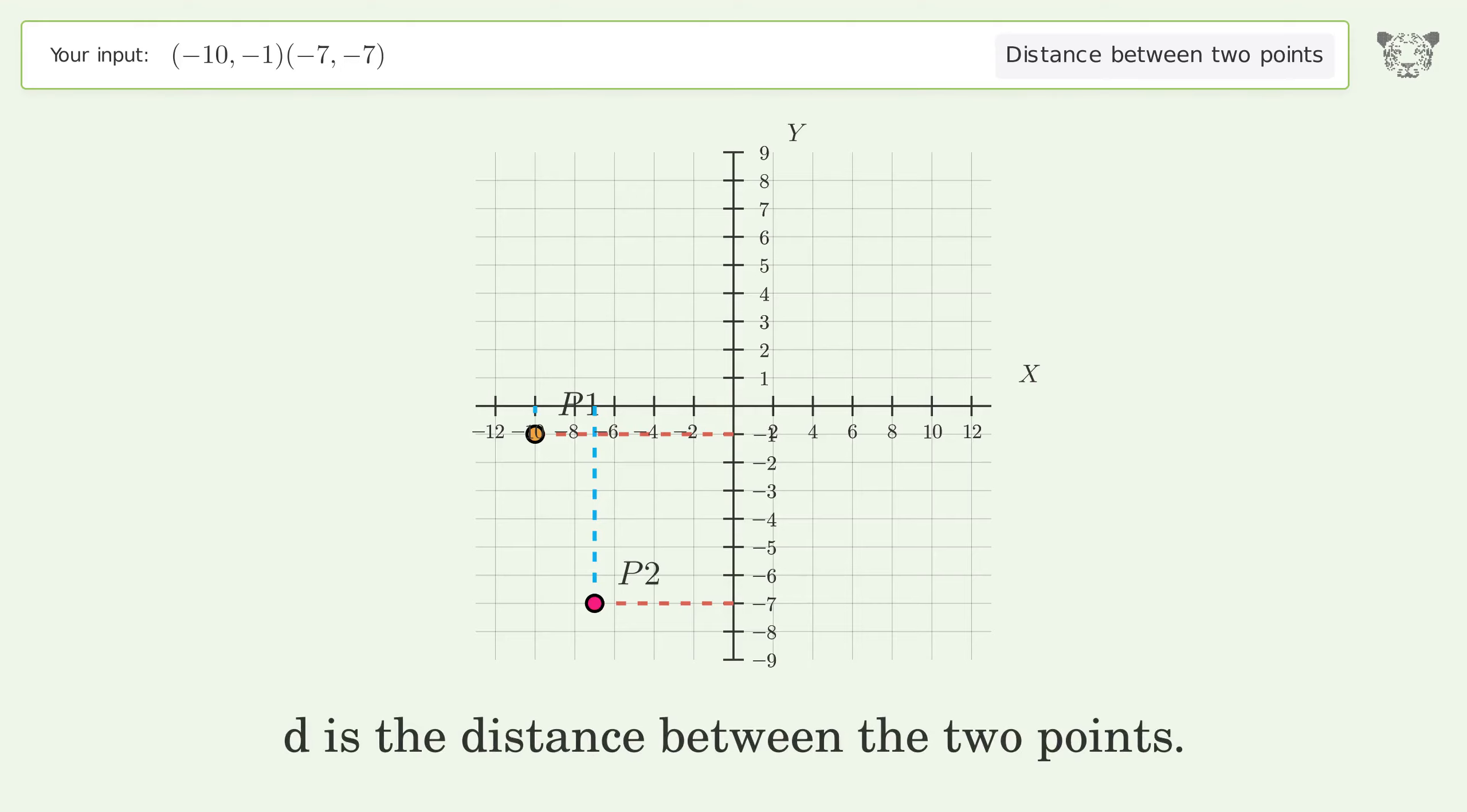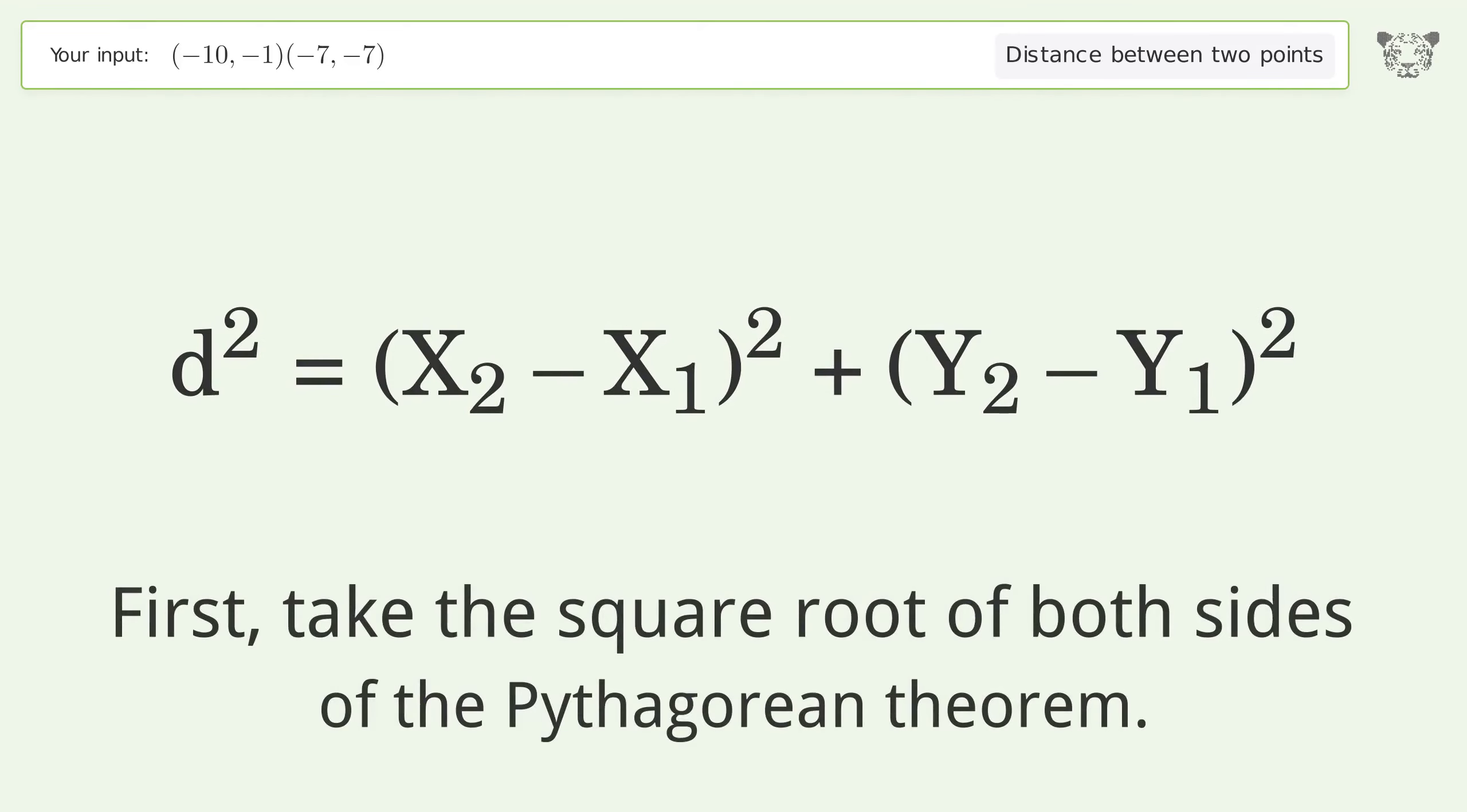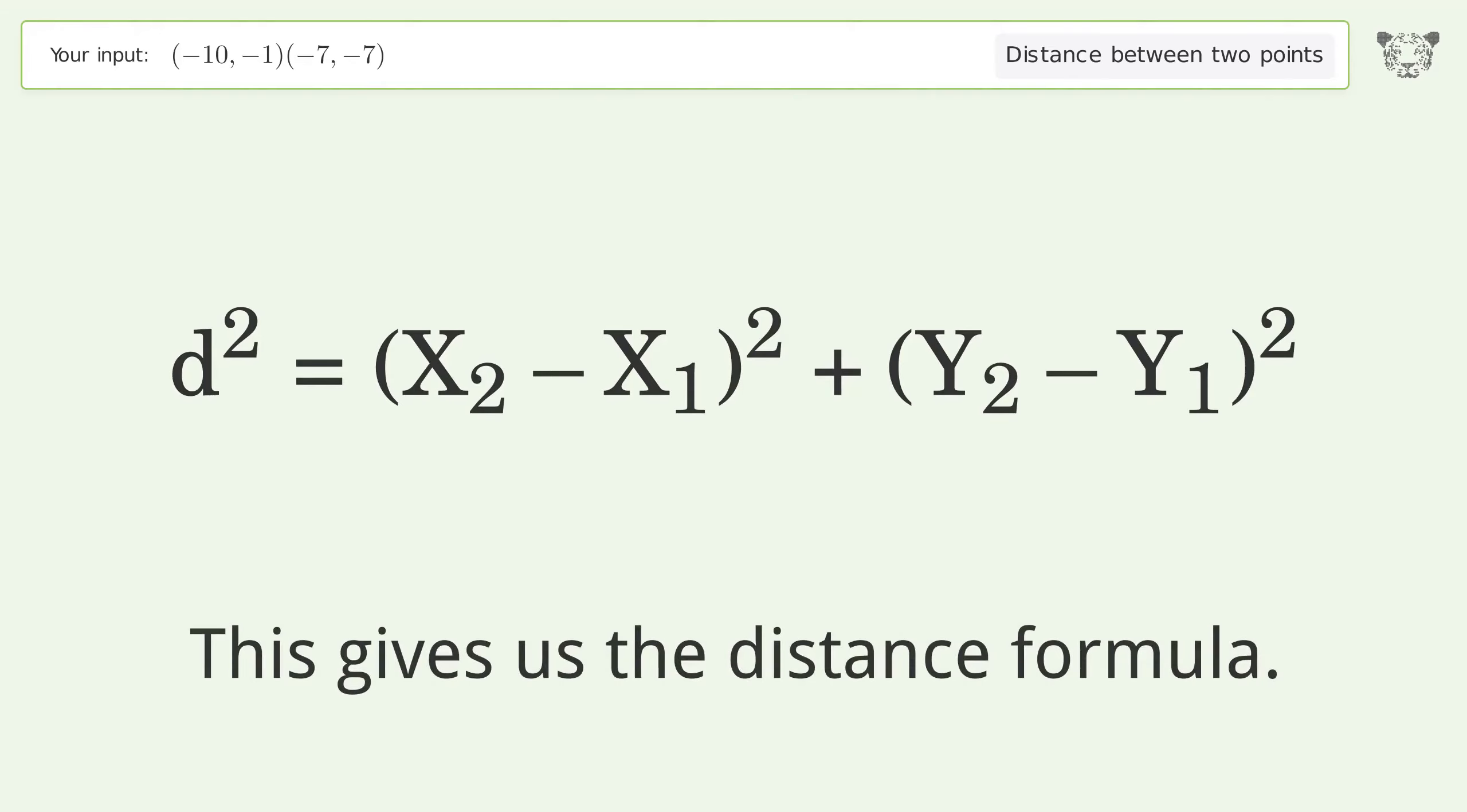d is the distance between the two points. First, take the square root of both sides of the Pythagorean theorem. This gives us the distance formula.